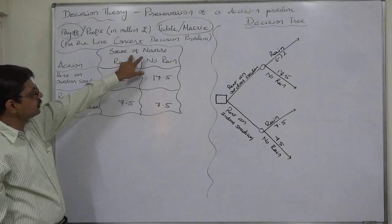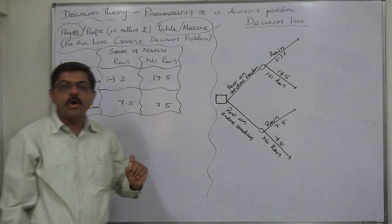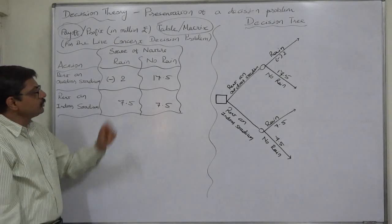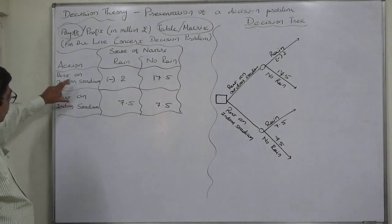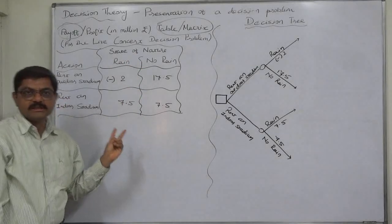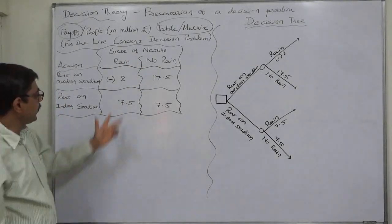These are states of nature that means set of chance events, possibilities. They are mutually exclusive and exhaustive. With each and every action only these two states of nature or possibilities are attached to them.